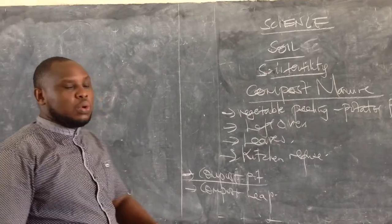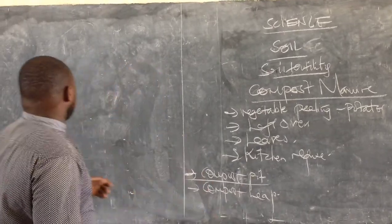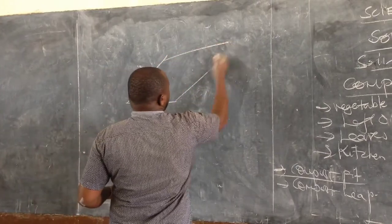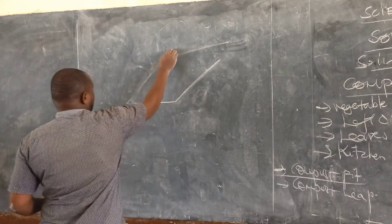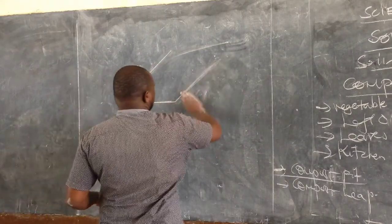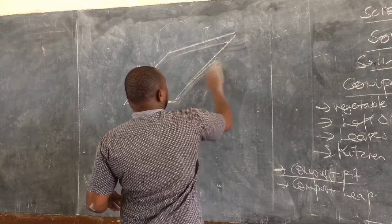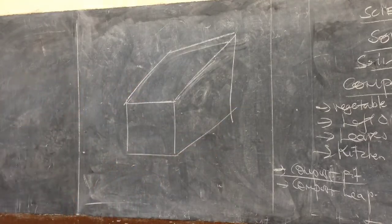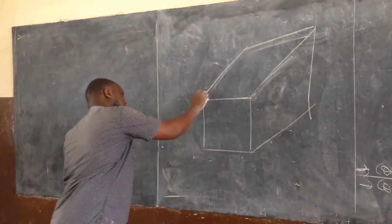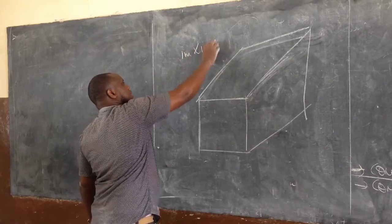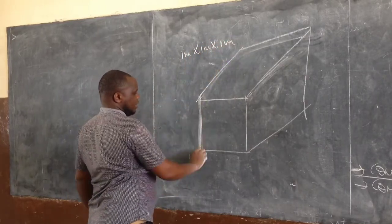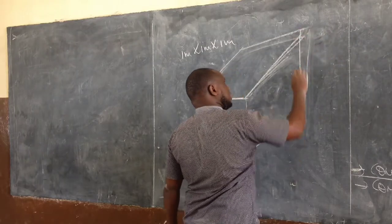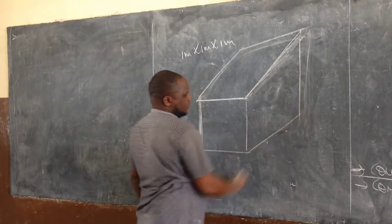The compost pit — I am going to use a diagram to explain it. I have two ways of stretching the compost pit but we are going to draw them. Remember that it is a pit of one meter by one meter by one meter — that is one meter high, one meter width, and one meter length. This is what we call the compost pit.